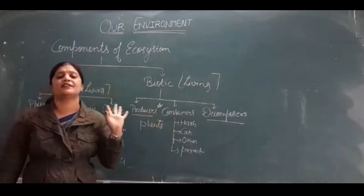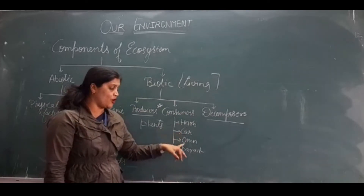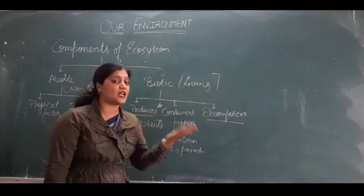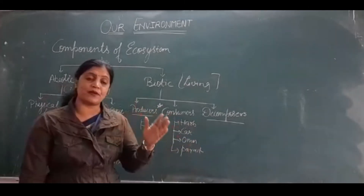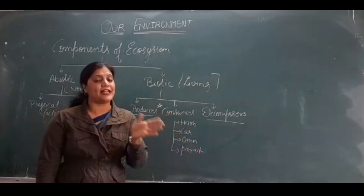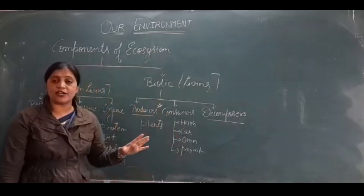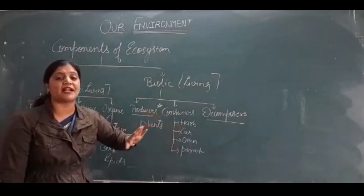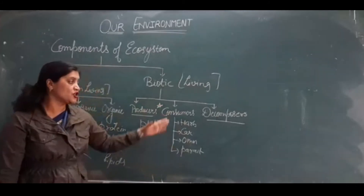Second is consumers. Consumers are always heterotrophic. Consumers are further categorized as herbivorous, carnivorous, omnivorous, and parasitic. Herbivorous eat plants but depend on others for food, so they are heterotrophic. Carnivorous eat animal flesh. Omnivorous eat both plants and animal flesh. Parasitic organisms depend completely or partially on a host for food — these are known as parasites.